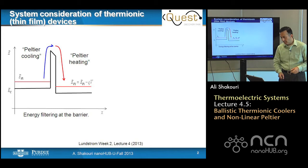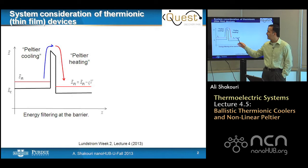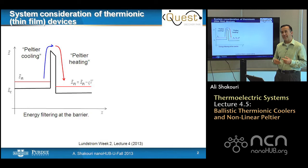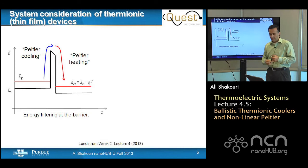In week 2, in lecture 4, Professor Landstrom introduced a thermionic device. When the barrier is very small, you have Peltier cooling and Peltier heating due to this thermionic emission and there is no joule heating in the device. And you saw how the transport parameters change when you move from a diffusive barrier to a thermionic barrier.